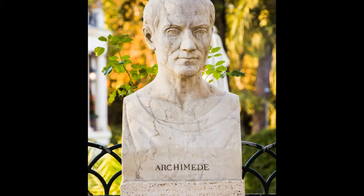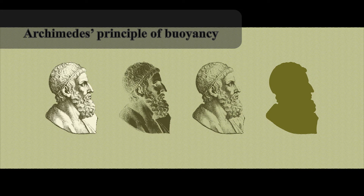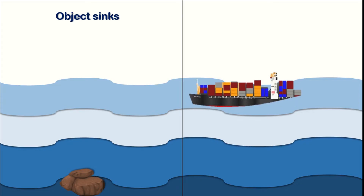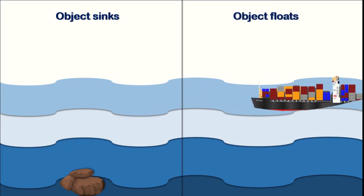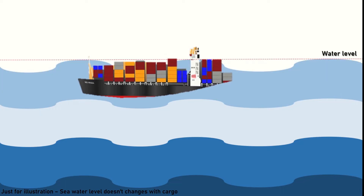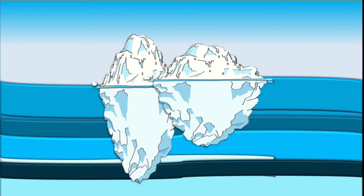Archimedes was a Greek mathematician who explained how an object floats or sinks in water or a liquid medium. According to Archimedes' principle of buoyancy, there are two instances: if the density of an object is more than the density of water, it sinks; if it is less dense, it floats. When it floats, it will displace an amount of water equal to the mass of the whole object. This can be illustrated by the example of a ship or an iceberg. The iceberg is slightly less dense than water, so it floats by displacing water equal to the weight of ice.